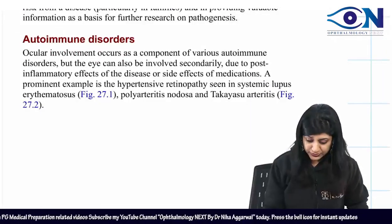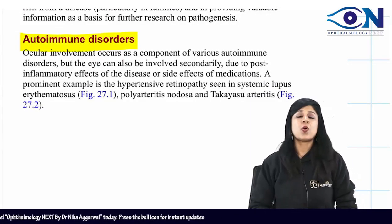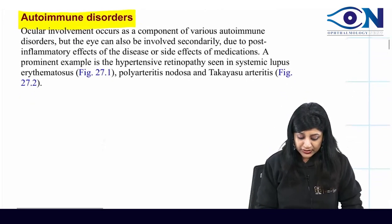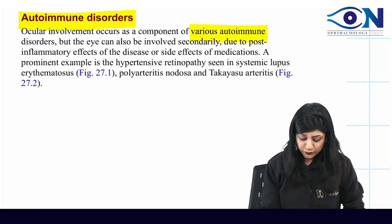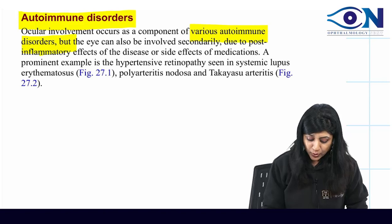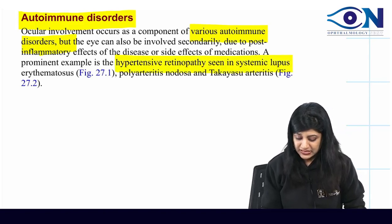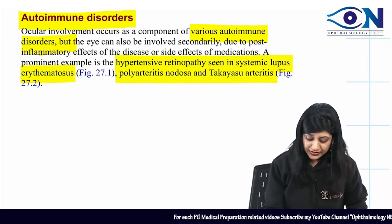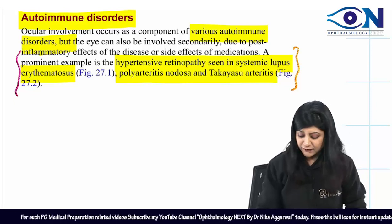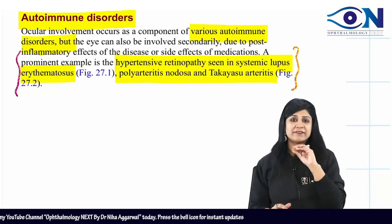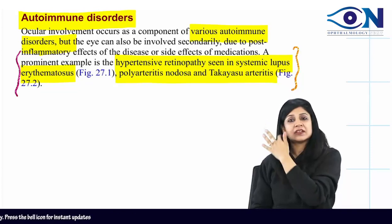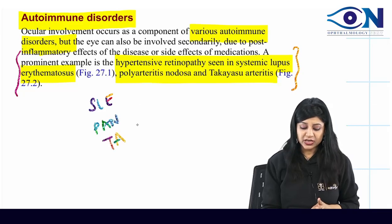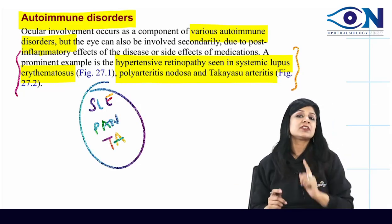Regarding autoimmune disorders, uveitis mainly has an autoimmune or allergic etiology. Ocular involvement is found in a number of autoimmune disorders. A prominent example is hypertensive retinopathy, which is seen in systemic lupus erythematosus, polyarteritis nodosa, and Takayasu arteritis. Every line here is important — hypertensive retinopathy in SLE, polyarteritis nodosa, and Takayasu arteritis.